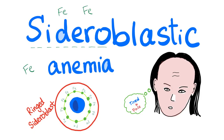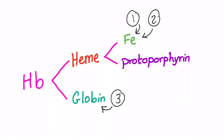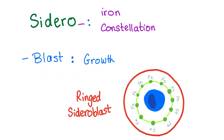Sideroblastic anemia is characterized by the presence of ringed sideroblasts in the bone marrow. Remember hemoglobin: heme and globin. The heme consists of iron and protoporphyrin. Iron deficiency anemia, anemia of chronic disease, thalassemia, and sideroblastic anemia are the main causes of microcytic anemia.